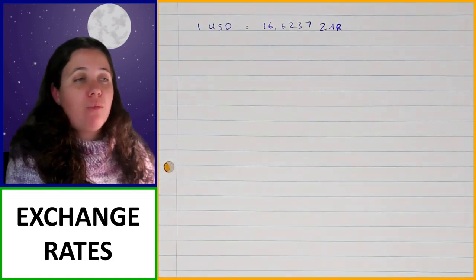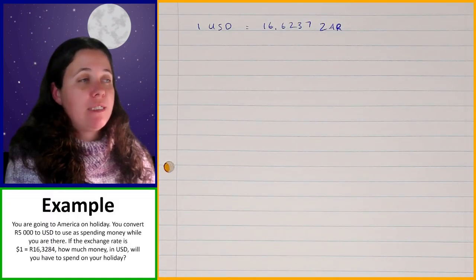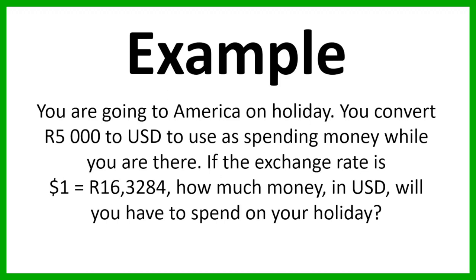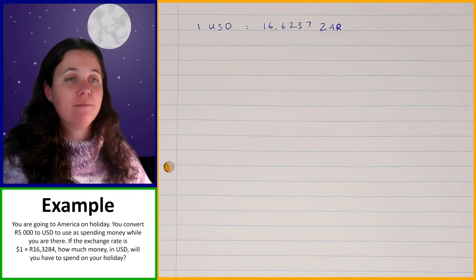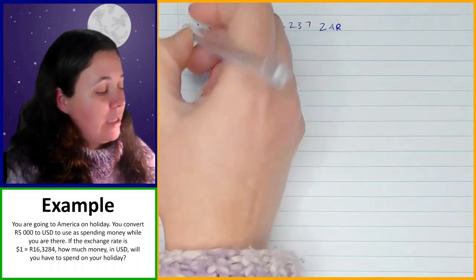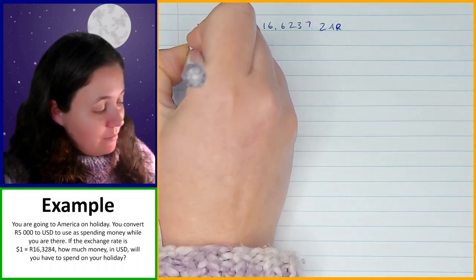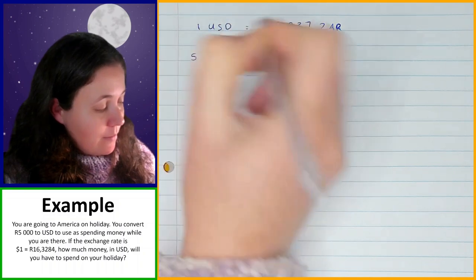Let's have a look at an example where we're actually going to be working with exchange rates. So in this example, you are going to America on holiday, you convert 5000 rand to USD or US dollars to use as spending money while you are there. If the exchange rate is $1 is 16.3284 rand, how much money in USD will you have to spend on your holiday? So let's have a look at how you would work this out. So first of all, the amount of money that we have is 5000.